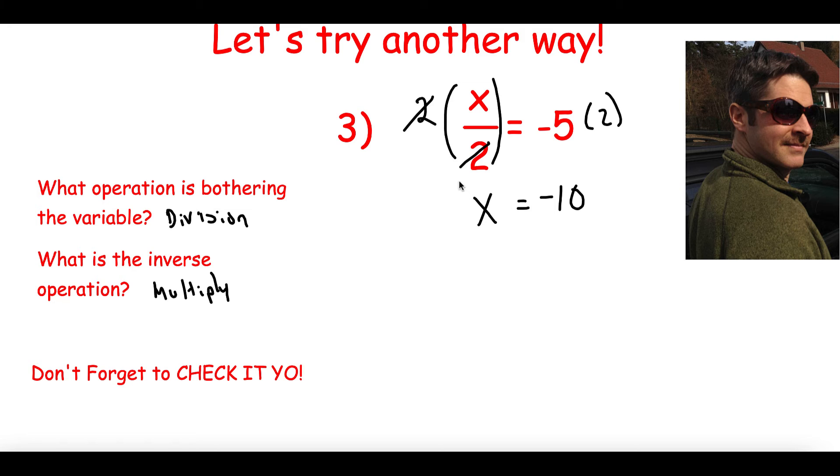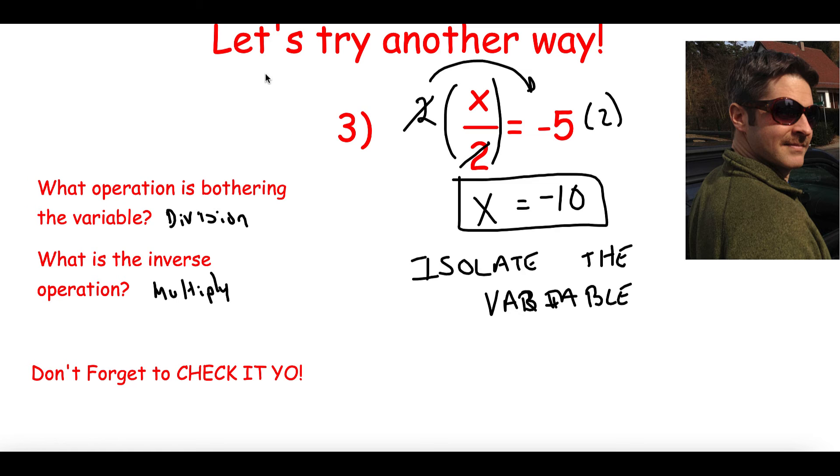I want to get this x all by itself. When I solve these equations, I want to get the variable all by itself. Sometimes we say we isolate the variable. And that's what we're doing. I'm moving everything that is not a number, that is just an x, to the other side. To move it from one side to the other side, I need to undo it. I need to do the inverse operation. And the inverse operation here, the inverse of dividing by 2 is multiplying by 2.